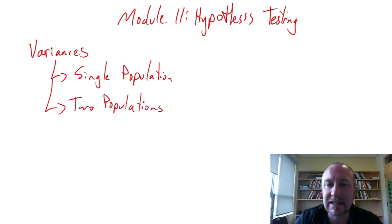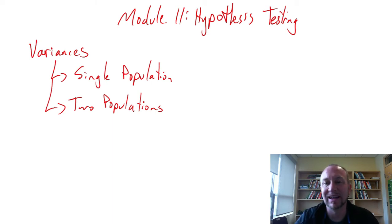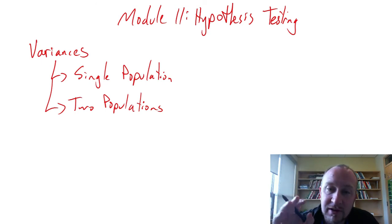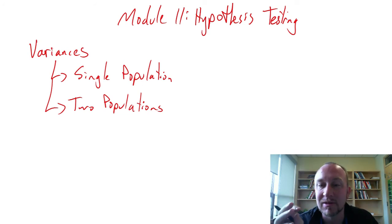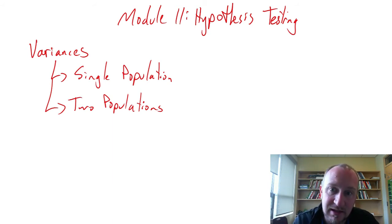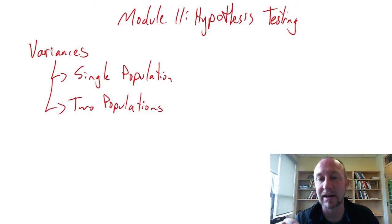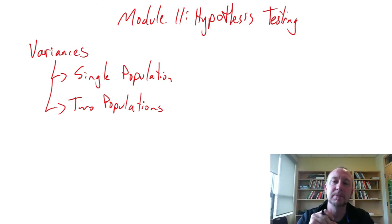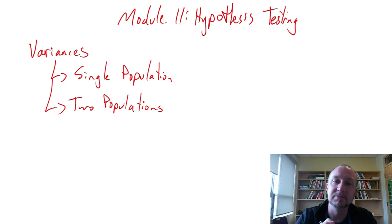We can no longer use our t distributions or z distributions because they don't apply — they're not relevant to the distribution of sample variances. Those distributions were for the distribution of sample means. Now we're looking at the distribution of sample variances when taking repeated samples from a normally distributed population.